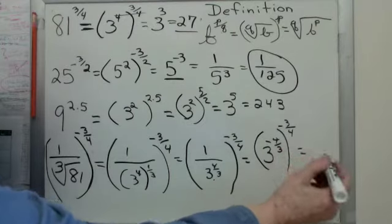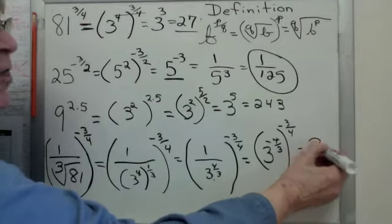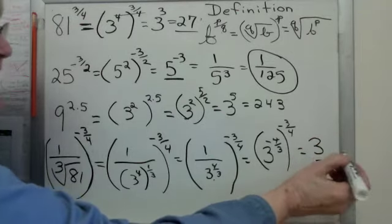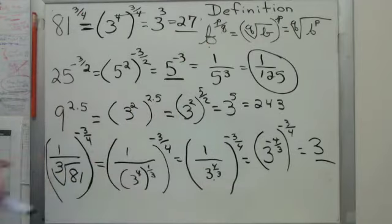Multiply. Negative times negative is positive. 4/3rds times 3/4ths is 1. 3 to the 1 is 3. So this rule ends up being quite helpful for some of the problems that we have to do.